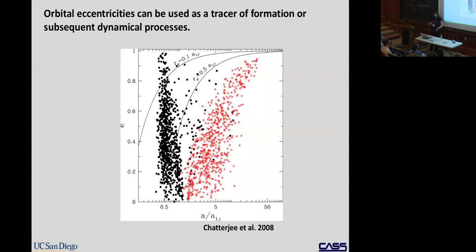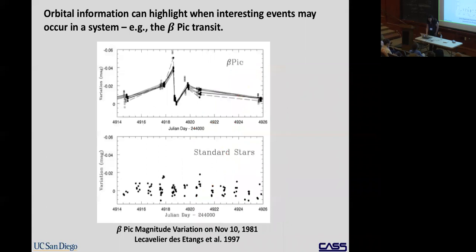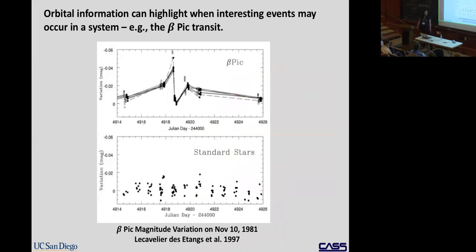Even with only a small fraction of the orbit covered, we could determine whether eccentricities are large or small. That could tell us whether directly imaged planets were scattered out to their locations or formed there. Another thing you can learn is to use orbital information to highlight interesting events that might occur in a system — for example, the possibility that beta Pictoris b might transit.